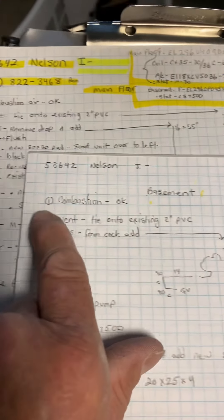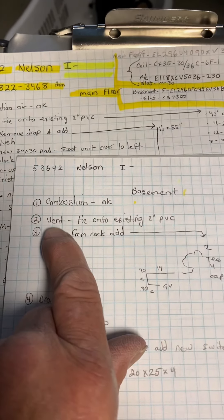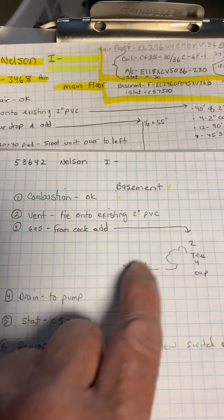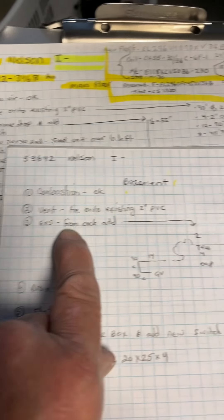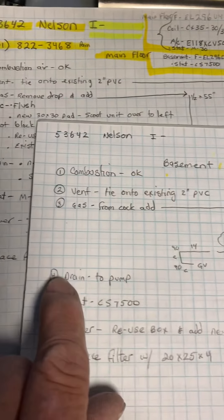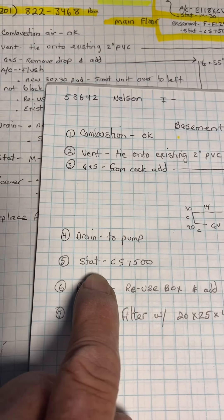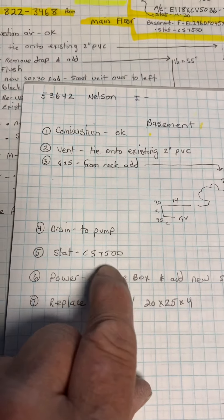The basement furnace. Combustion air is okay. Vent, tie into the existing PVC. Gas, just as it shows. Drain to pump. Thermostat, it's getting this thermostat. I'm not quite sure what one that is, but it's ordered.